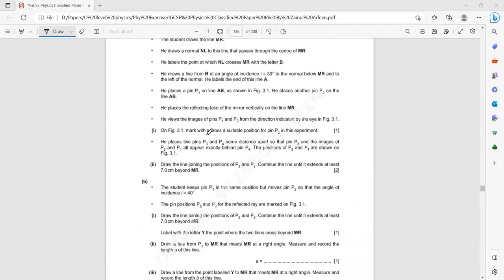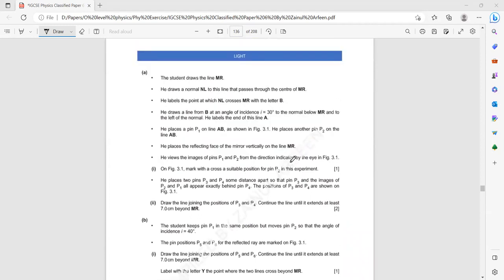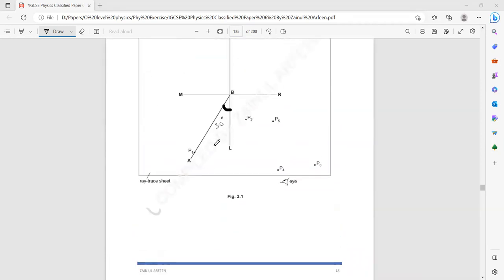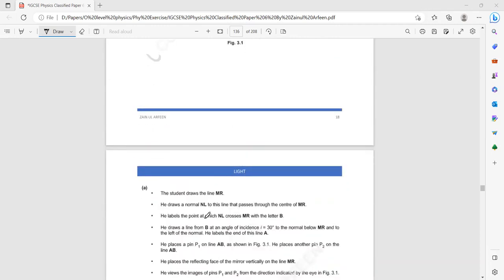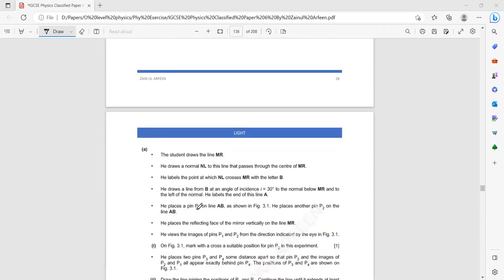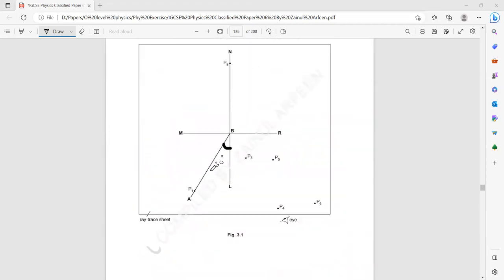On the figure, mark with a cross a suitable position for P2. He places P1 and he placed another pin P2 on the line AB. So we have to mark a position of another pin P2. Whenever you are marking a position of the two pins, it should be about 5 cm apart from each other. So this is pin 1, where we should place pin 2, at least or minimum 5 cm. So we mark anywhere on this line AB and that is the position of P2.